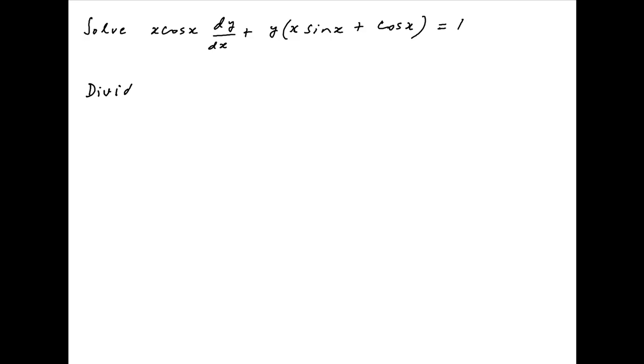We start by dividing both sides of the given differential equation by x cosx. We therefore get dy/dx plus (x sinx + cosx)/(x cosx) times y is equal to 1/(x cosx).